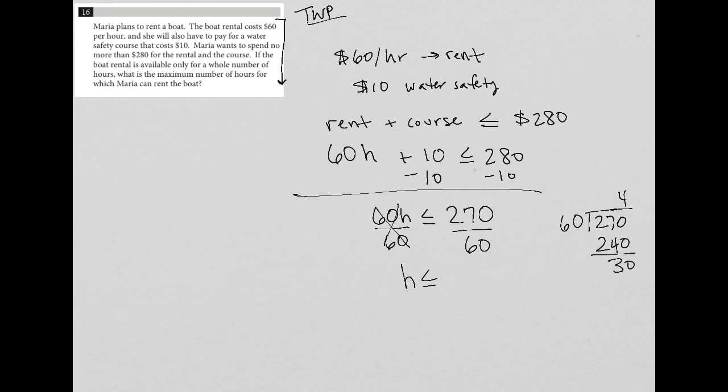Of course, there's a 30 remainder, which doesn't really matter because you can only rent the boat for a whole number of hours. So the maximum number of hours that she can rent the boat for is four hours. That definitely keeps her under her $280 max in terms of what she wants to pay out of pocket. So the number four is the correct answer to this question.